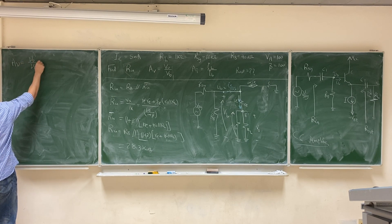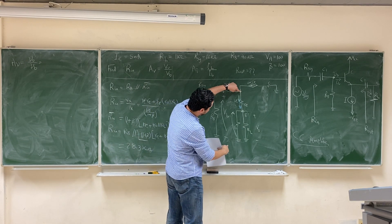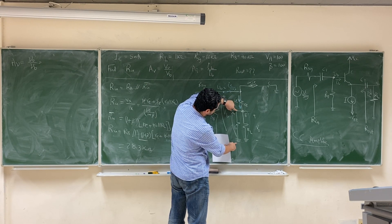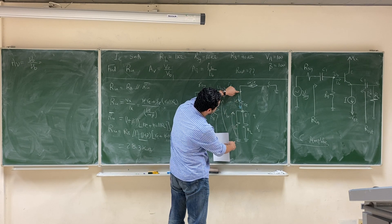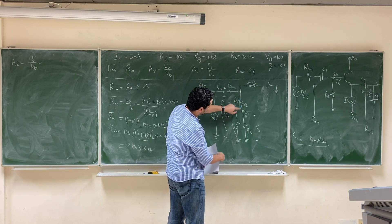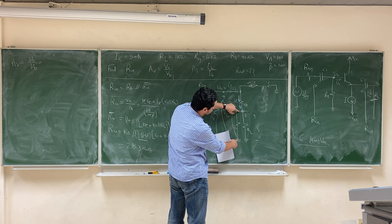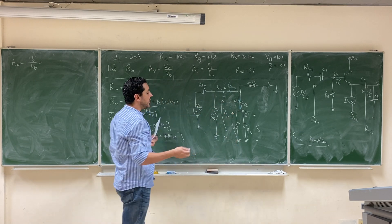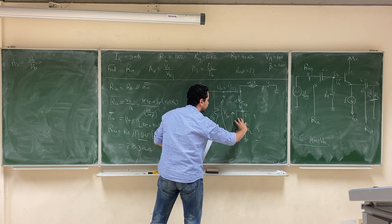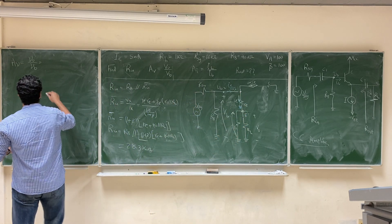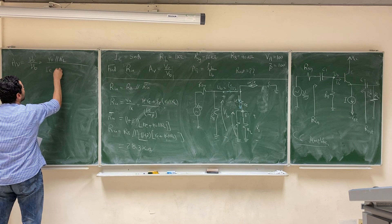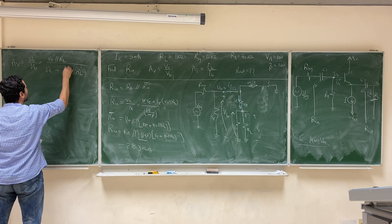Vbase is between the base node and ground, while Vout is only from the emitter node to ground. So Vout is part of Vbase — we can obtain it by a voltage divider. Vbase is the total voltage, while Vout is the portion across this parallel combination. So Vout over Vbase will be a voltage divider: the parallel combination of RO ∥ RL divided by the sum RE + (RO ∥ RL).